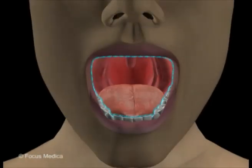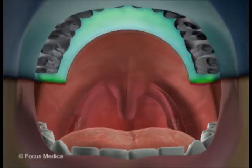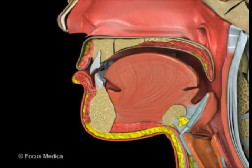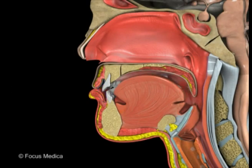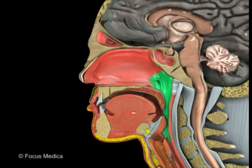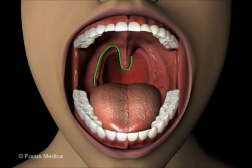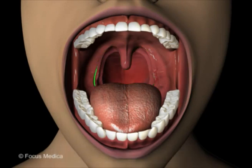The oral cavity is the region bounded by the lips and cheeks at the sides, hard and soft palate at the roof, and the tongue at the floor. The alveolar sockets of the maxilla and the mandible raise the ridge and divide this cavity into a lateral vestibule and medial oral cavity proper. The pharynx is the region behind the oral cavity. The palatoglossal arch is the gateway — the oropharyngeal isthmus — to the pharynx, and is the line of demarcation between the oral cavity and the pharynx.